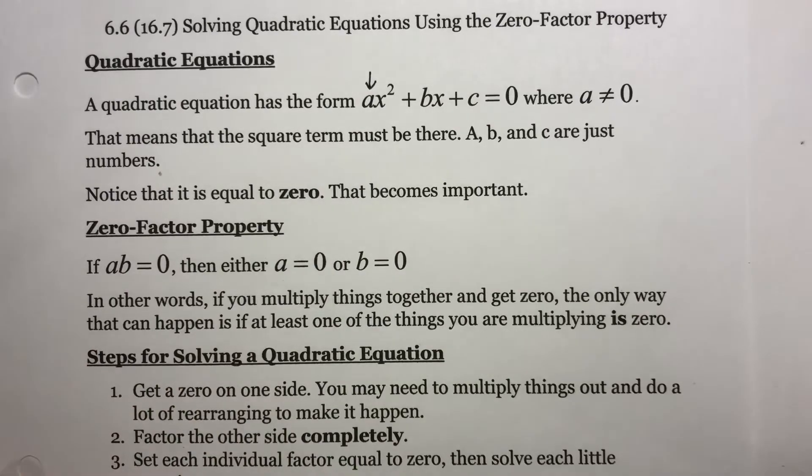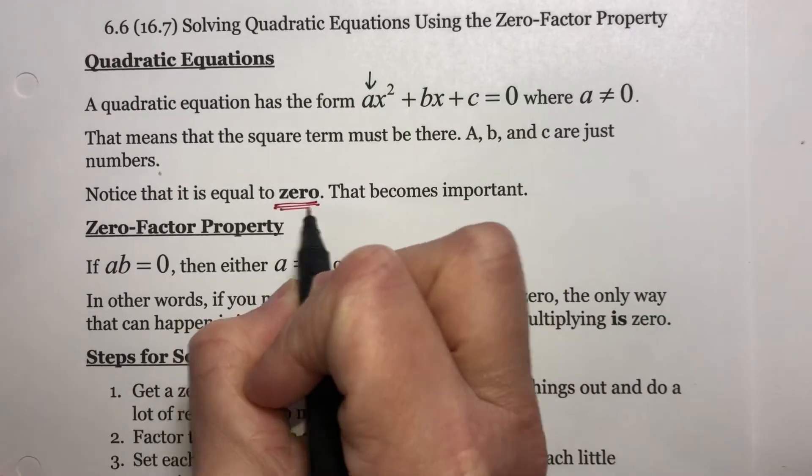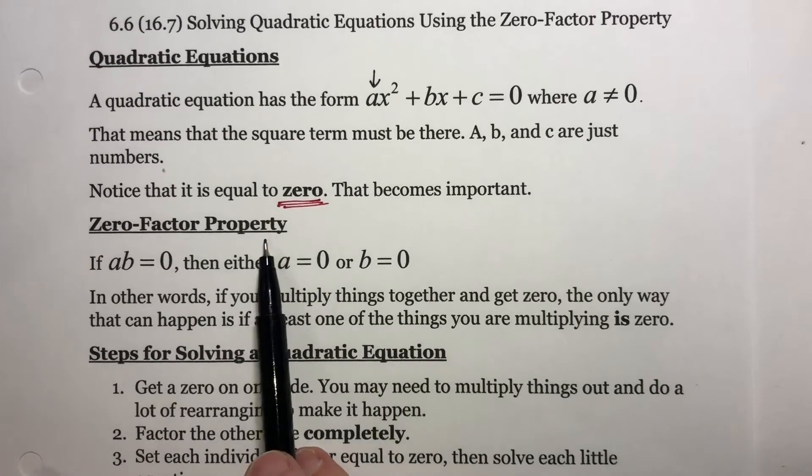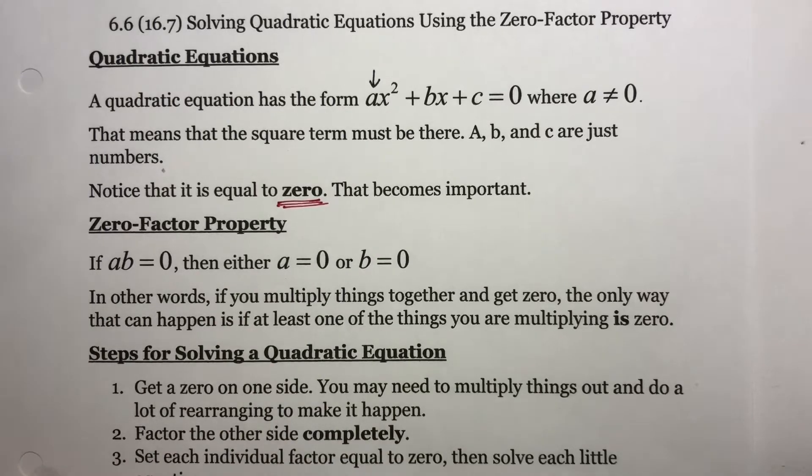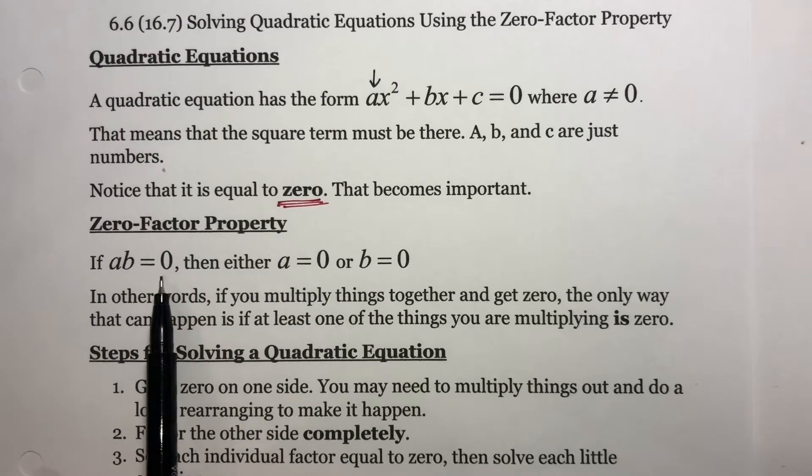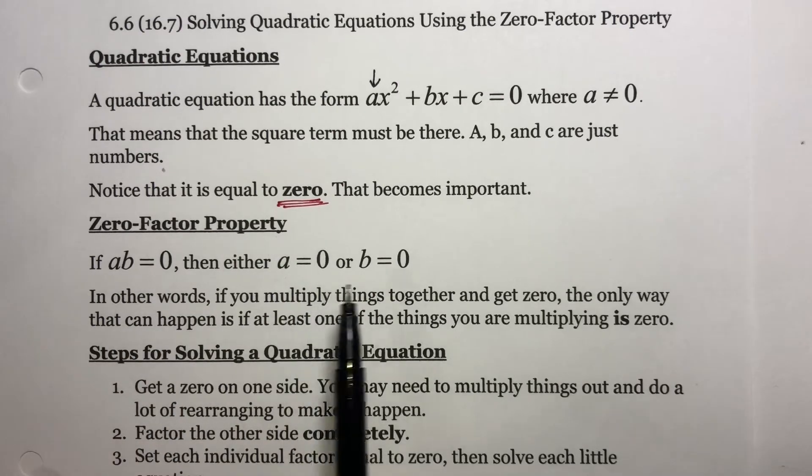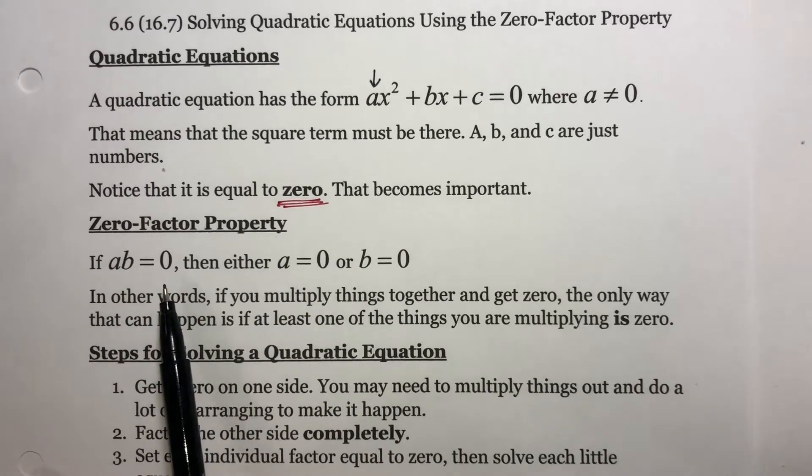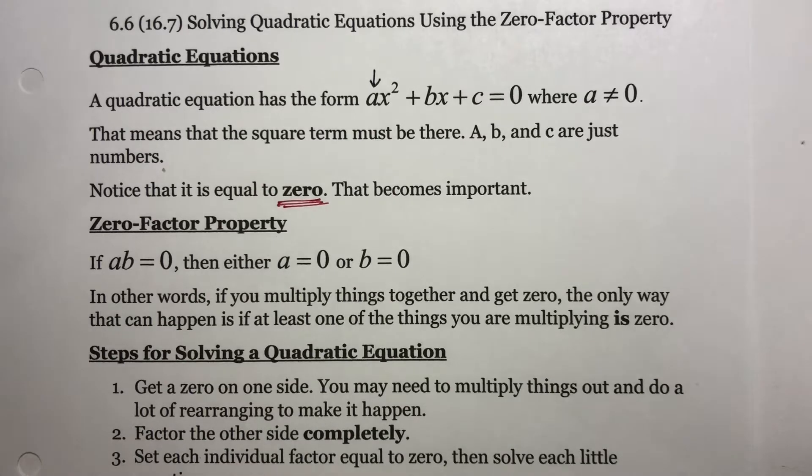Notice that this thing is equal to 0. That becomes important. Zero-Factor Property: This is something you know, but you may not have thought about in this way. If ab = 0, then either a = 0 or b = 0. In other words, if you multiply two things together and get 0, the only way that can happen is if at least one of the things you're multiplying is 0. We don't get 0 as an answer any other way.